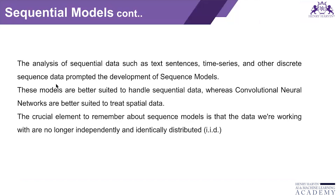The analysis of sequential data — such as text sentences, time series, and other discrete sequences which are not continuous — has gaps and is not connected. That type of data prompted the development of sequential models, which are better suited to handle sequential data. CNN, on the other hand, is better suited to treat spatial, pixel-wise data. The key element to remember is that data in sequence models is no longer independently or identically distributed.